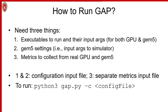To run GAP, you really need three things: first, the executables you want to run and their input arguments, which are run both in GEM5 and on a real GPU; second, GEM5's input arguments; and finally, the metrics you want to collect from the real GPU and GEM5. The first two come from a configuration input file, and the last one uses a separate metrics input file. Given these, GAP can then be run on the command line using Python.